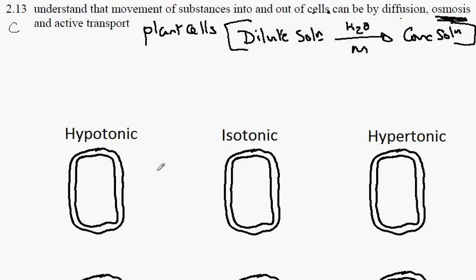In plant cells which all have cell walls of course, these do not present a barrier to the movement of water. So we have three conditions that we're going to consider.